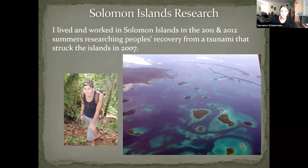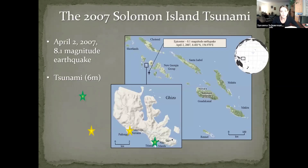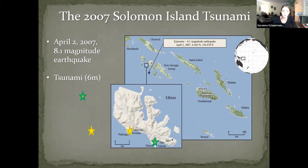I lived and worked in Solomon Islands in the 2011-2012 summers, researching people's recovery from a tsunami that struck them in 2007. I'll touch on my work here and there throughout the course. For those of you that don't know where Solomon Islands is, it's located just northeast of Australia in the South Pacific — six main landmasses but really hundreds of islands in the archipelago. I spent most of my time on the island of Gizo, where the two main villages I worked in — Titiana and Pailongue — are located.